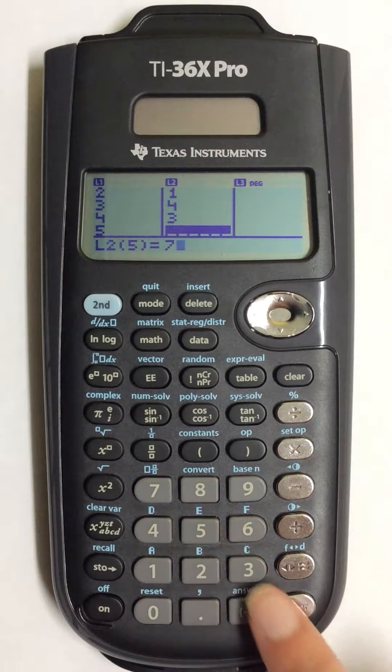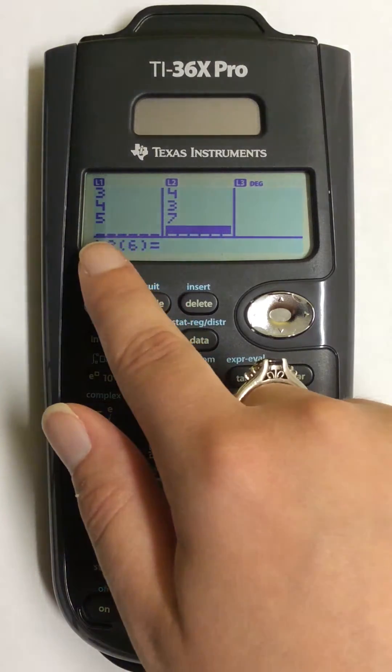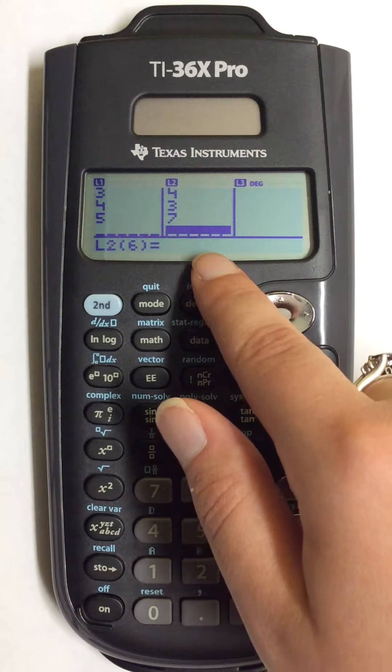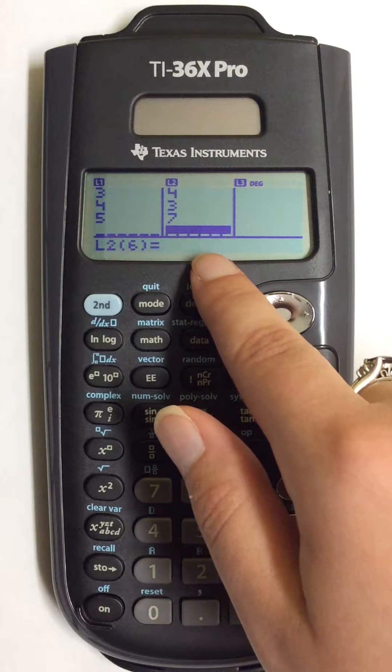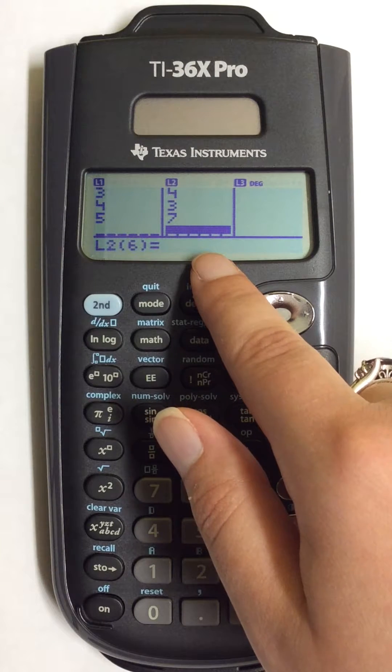When you have finished entering all of your data, make sure that they end in the same location for both lists. If they don't, your calculator will not be able to calculate any numbers for your two variable statistics.